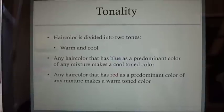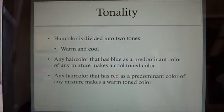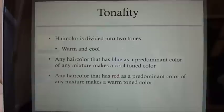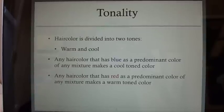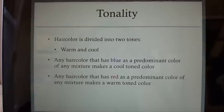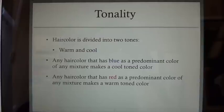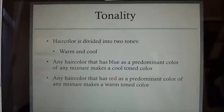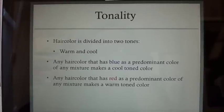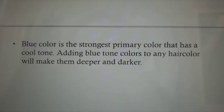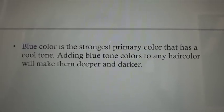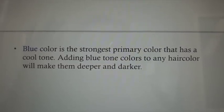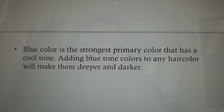Hair color is divided into two tones: warm and cool. Any hair color that has blue as a predominant color of any mixture makes a cool-toned color. Any hair color that has red as a predominant color of any mixture makes a warm-toned color. Blue is the strongest primary color that has a cool tone. Adding blue-tone colors to any hair color would make them deeper and darker.